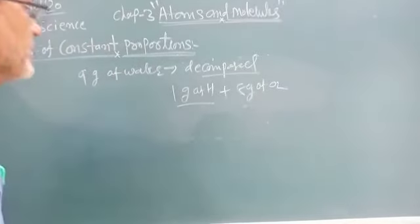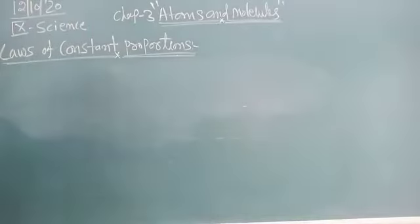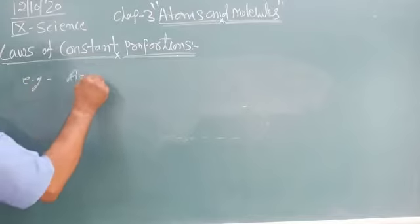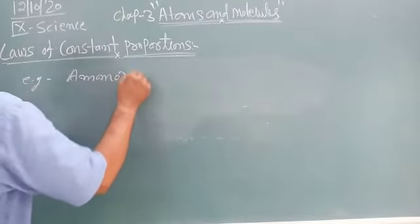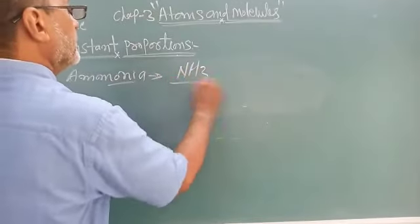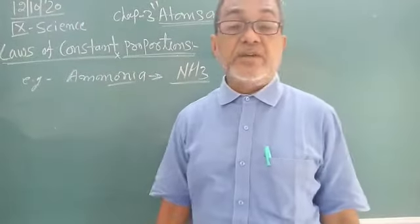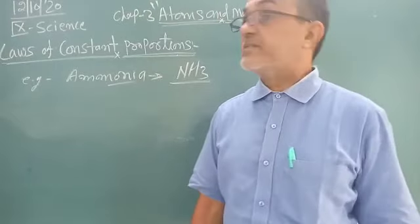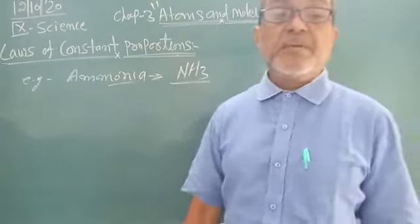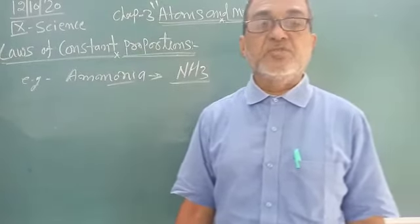Another example is ammonia. Ammonia's formula is NH3, where N is nitrogen and H is hydrogen. Nitrogen and hydrogen are in constant proportion of mass.